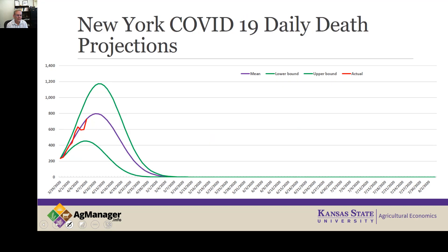If we look at New York, you can draw your own conclusions in terms of how accurate the numbers are being projected. As of April 7th, unfortunately, the number of deaths were very close to the original projections that were made on March 26th.